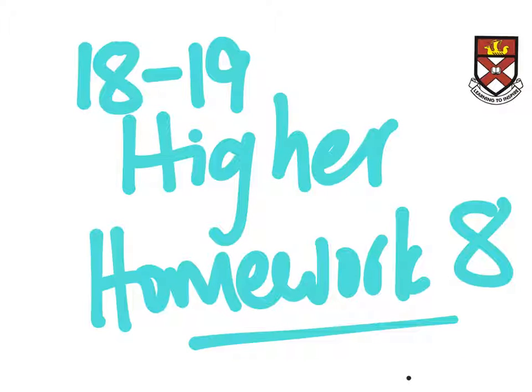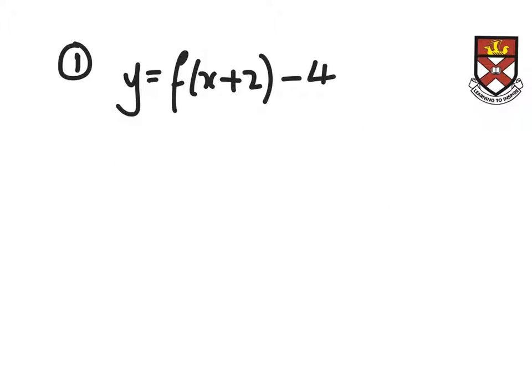Okay, here we go with some hints for homework sheet number 8. The first question, you have to transform the graph, in other words you have to move it. You know that the plus 2 in the bracket means the graph has got to go left 2, and then the negative 4 at the end would mean down 4. So take the picture that you've got and do that transformation.